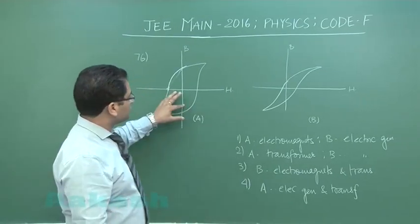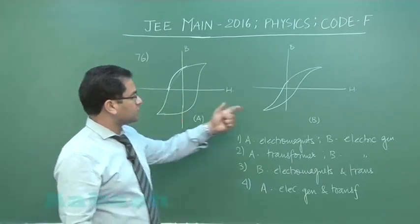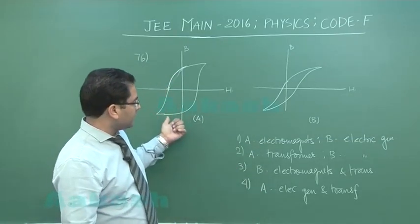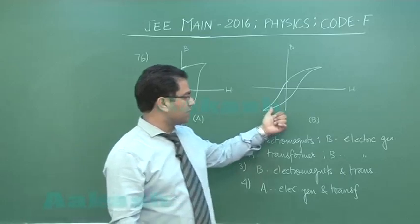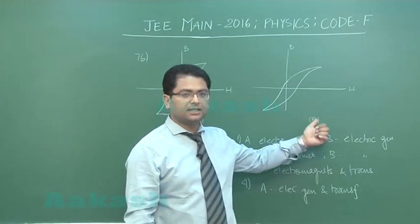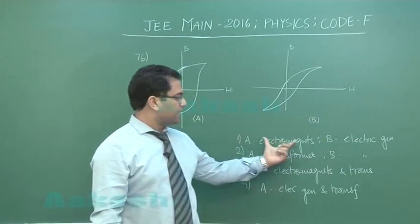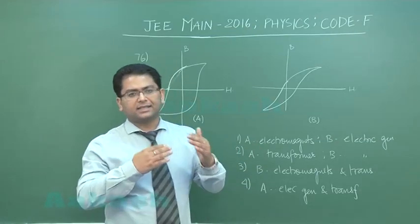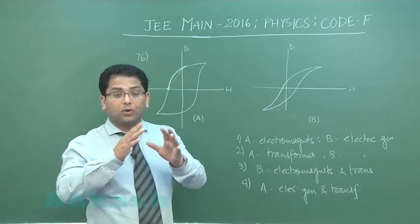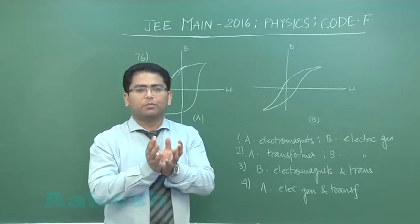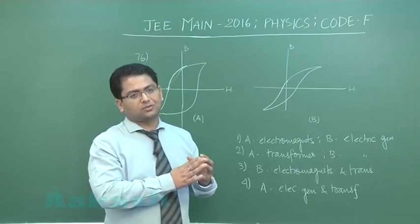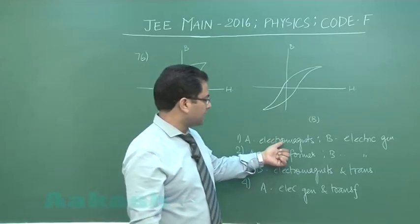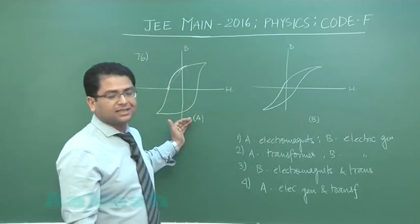If option A says it is used for an electromagnet and B for an electric generator, that would be wrong, because electromagnets are constantly magnetized and demagnetized during the process. We require a smaller hysteresis loop area so that the energy loss is lesser. Similarly, using A for a transformer would also be wrong.